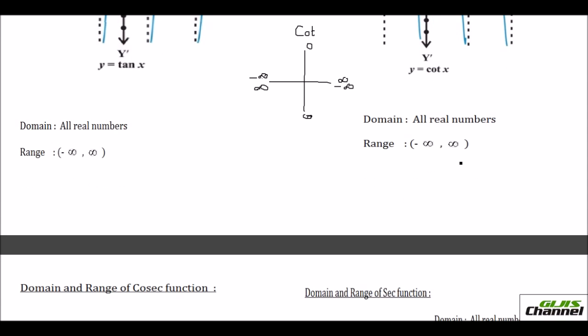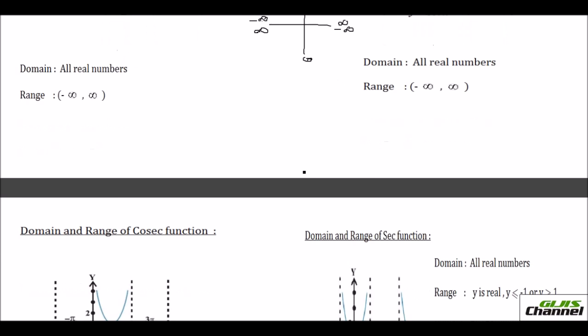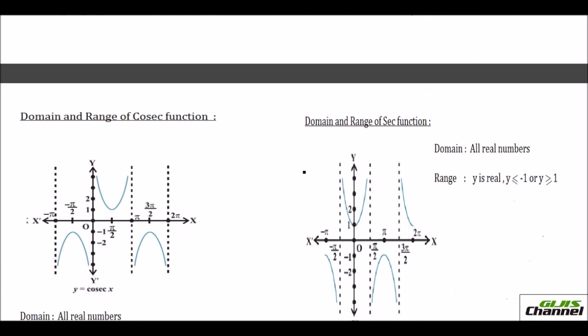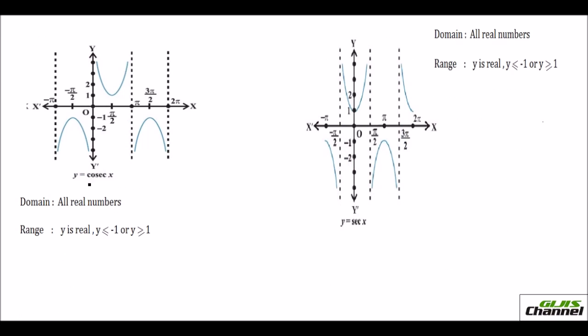For cotangent, the domain is all real numbers and the range is also all real numbers, from negative infinity to positive infinity.